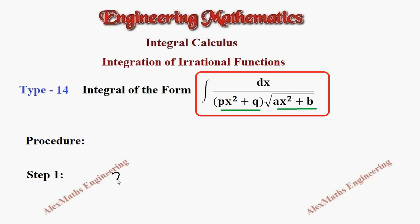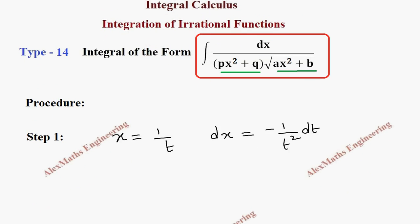After the procedure, we have to take x equal to 1 by t, and we have to find its differentiation dx, which is minus 1 by t square dt.